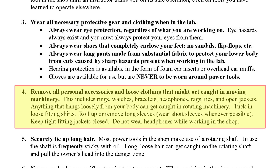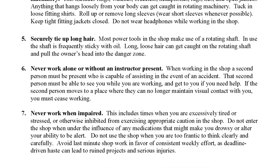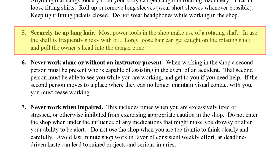Rule number 4 is to remove all personal accessories and loose clothing that might get caught on moving machinery. This includes any jewelry on your hands and wrists, any clothing that hangs loosely from your body such as a tie or an open jacket, or headphones that could get caught or prevent you from hearing directions from an instructor in the lab. Rule number 5 is that hair longer than shoulder length must be securely tied up to prevent it from accidentally coming into contact with any rotating machinery in the lab.